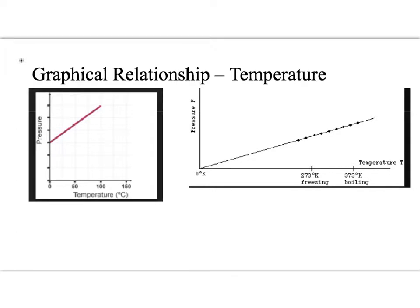In the lab with temperature versus pressure, you were recording the temperature in degrees Celsius. What you should have seen was that it too had a direct relationship. As your temperature increased, the pressure increased, and that's because the particles are moving faster, therefore they're going to collide faster.